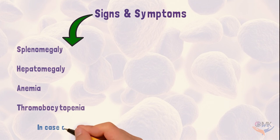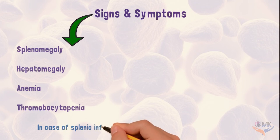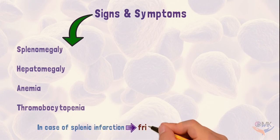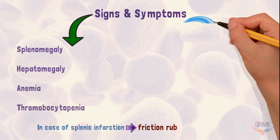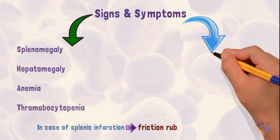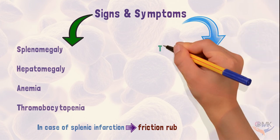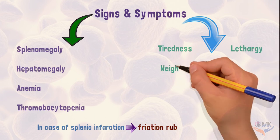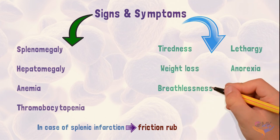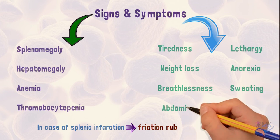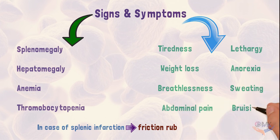In case of splenic infarction, a friction rub is heard — a friction rub is a sound heard through a stethoscope caused by rubbing together of two serous surfaces. Symptoms associated with these patients are tightness, lethargy, weight loss, anorexia, breathlessness, sweating, abdominal pain, and bruising.